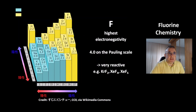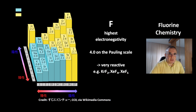This is what's special about the chemical element fluorine: it has the highest electronegativity on the Pauling scale with 4.0. Next is oxygen, then chlorine, then nitrogen. It is so reactive that it can even react with heavier noble gases. Known compounds are, for example, krypton difluoride, xenon tetrafluoride, and xenon hexafluoride.